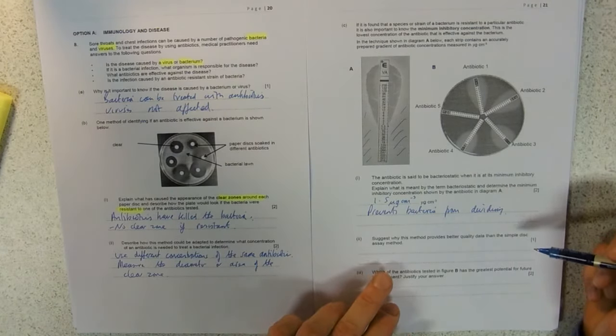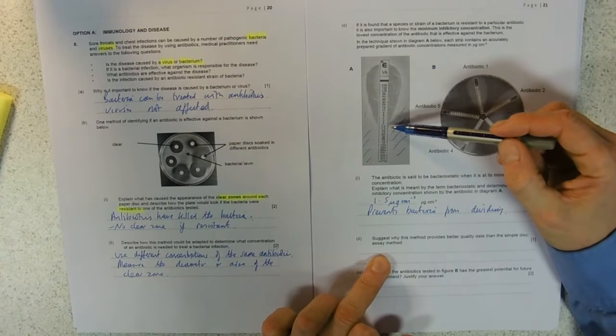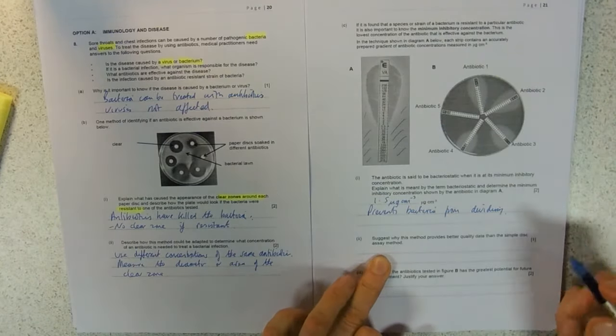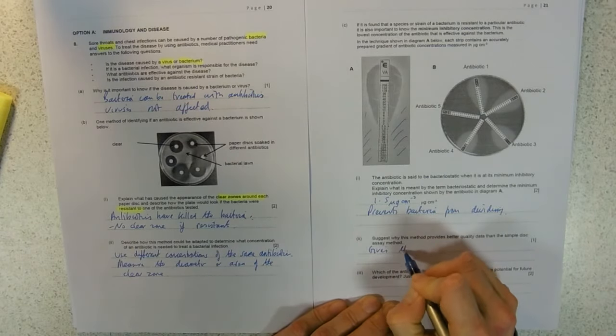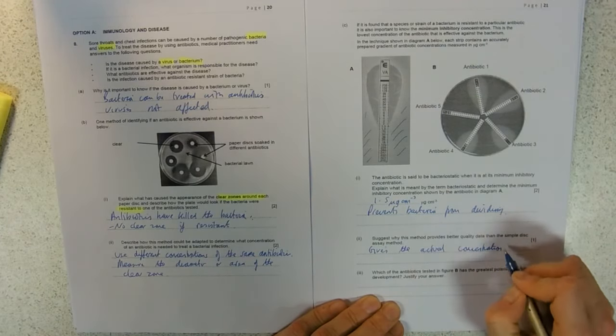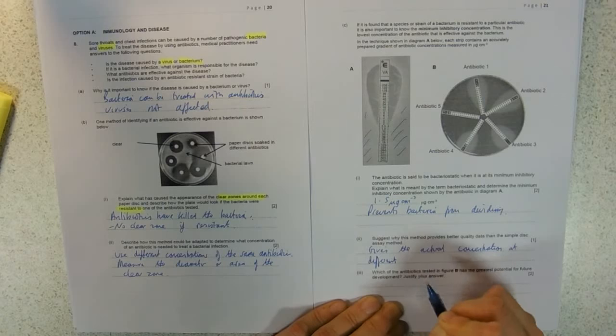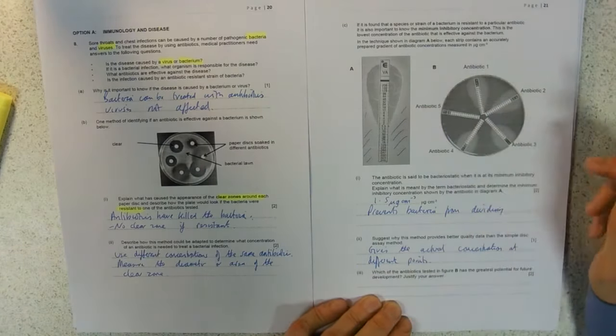Suggest why this method provides better quality data than simple disk assay. We've actually got numbers here giving an actual concentration rather than just comparing one to another. So it gives a more quantitative approach - it gives the actual concentration at different points.